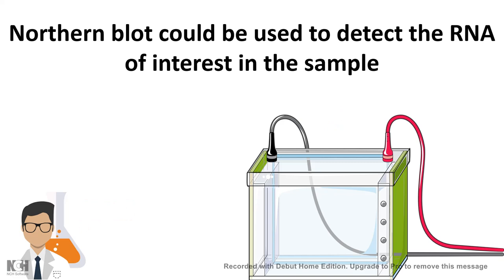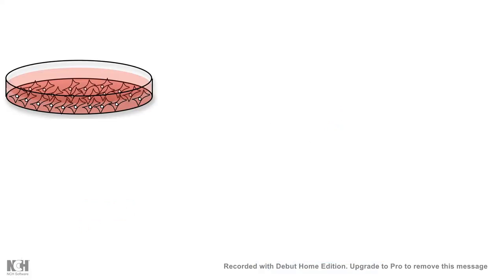Northern blot is a technique used to detect our RNA of interest in a sample. Let's say in this cell line we want to detect that our gene of interest is expressed or not. The way we can do it is to find the RNA which is produced from the gene of interest X, so we are going to target RNA X in this sample.